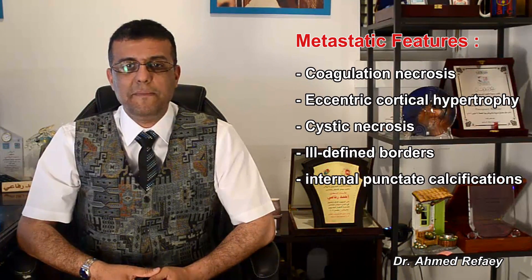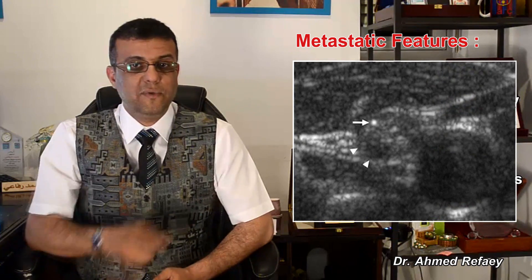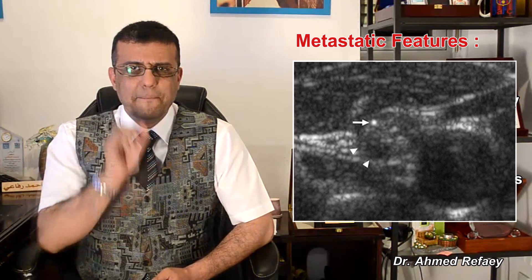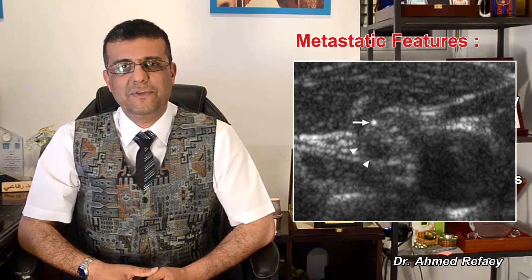Metastatic lymph nodes may also be hypoechoic compared with the adjacent muscles, as you see in this image. They may have punctate calcifications, which is common in metastatic lymph nodes from papillary carcinoma of the thyroid gland.